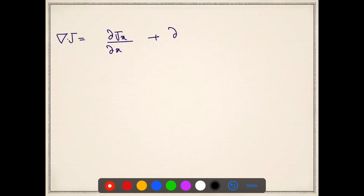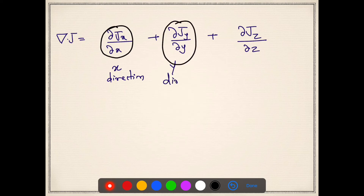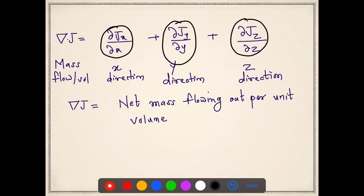Writing the full expression of divergence of j: ∂jx/∂x plus ∂jy/∂y plus ∂jz/∂z. The first term is the net mass flow rate per unit volume in the x direction, the second term is the net mass flow rate per unit volume in the y direction, and the third term is in the z direction. So the divergence of j can be understood as the net mass flow rate going out per unit volume — that is its physical interpretation.